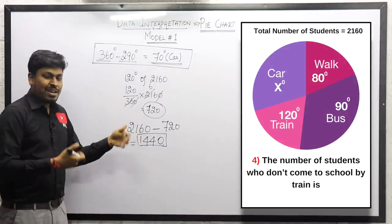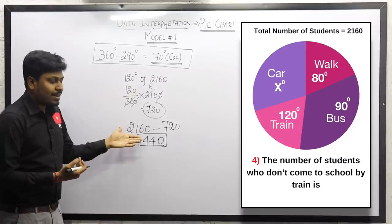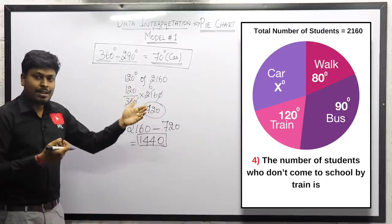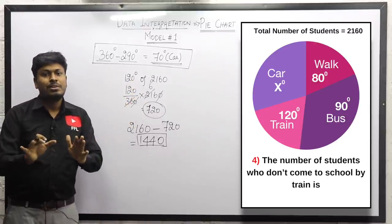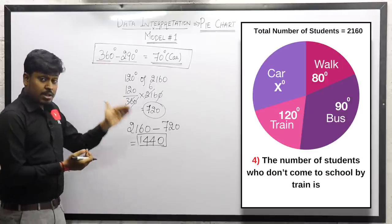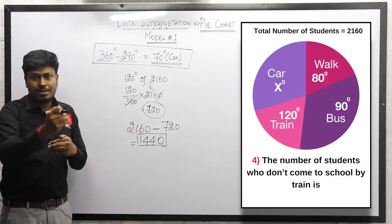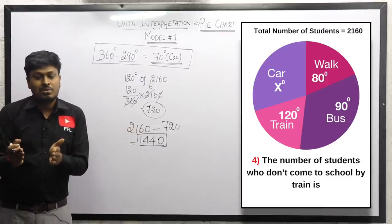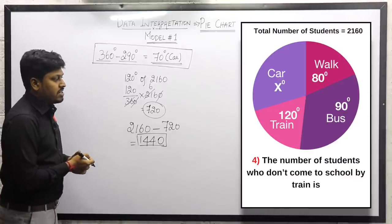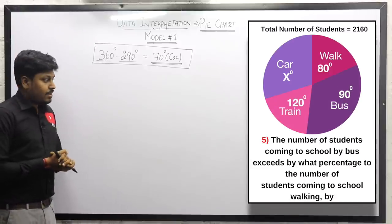There are many ways to solve question 4. You can subtract the train students from total, or alternatively add the degrees for walk, bus, and car and compute directly — it's your choice. The answer for question 4 is 1440 students traveling by walk, bus, and car.